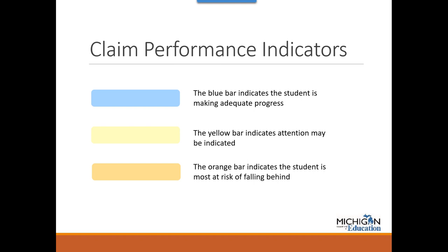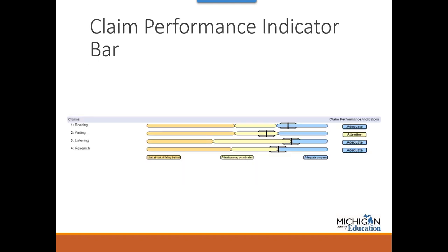There are three claim performance indicators. Blue is for students who are making adequate progress. Yellow is for students whose progress shows attention may be indicated. Orange is for students whose performance indicates they are most at risk of falling behind. Claim performance indicators are measured on a different scale than overall performance, and student claim scores are divided into three categories compared to four performance levels. It is therefore possible that a student could earn proficient or advanced performance levels while receiving attention or at-risk claim performance indicators. The claim performance indicator bar provides context to the student's claim performance by showing their claim level performance relative to the range of possible performance for each claim.